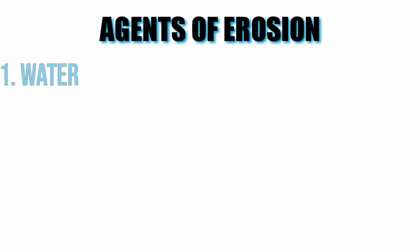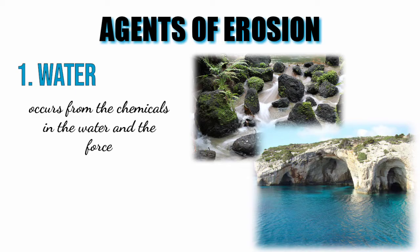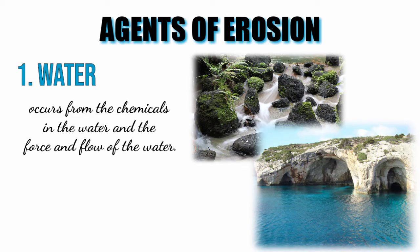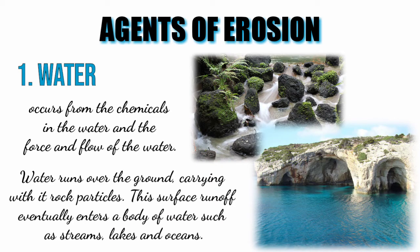Erosion takes place due to the following agents. Water: this occurs from the chemicals in the water and the force and flow of the water. Water runs over the ground carrying with it rock particles. This surface runoff eventually enters a body of water such as streams, lakes, and oceans.